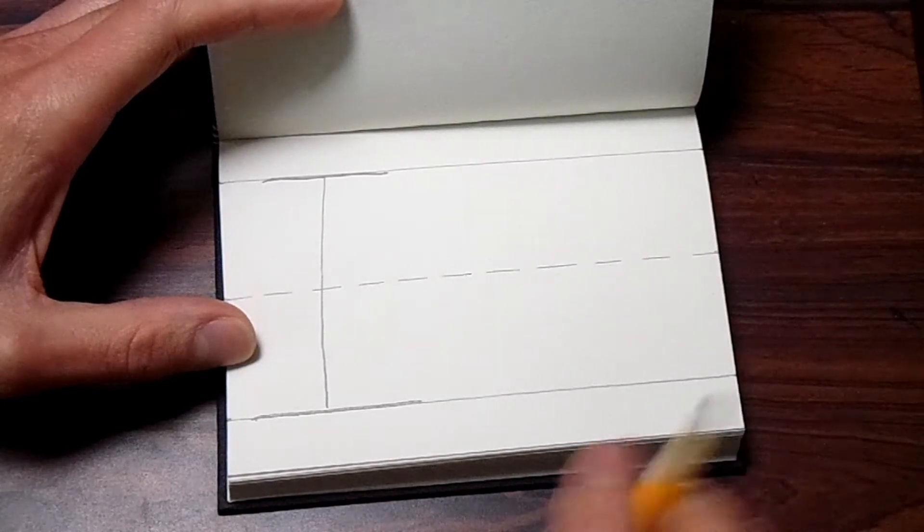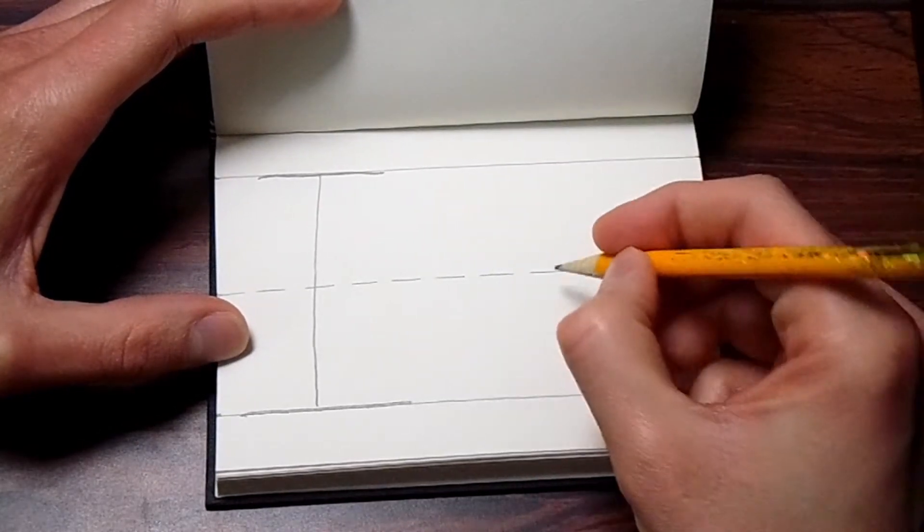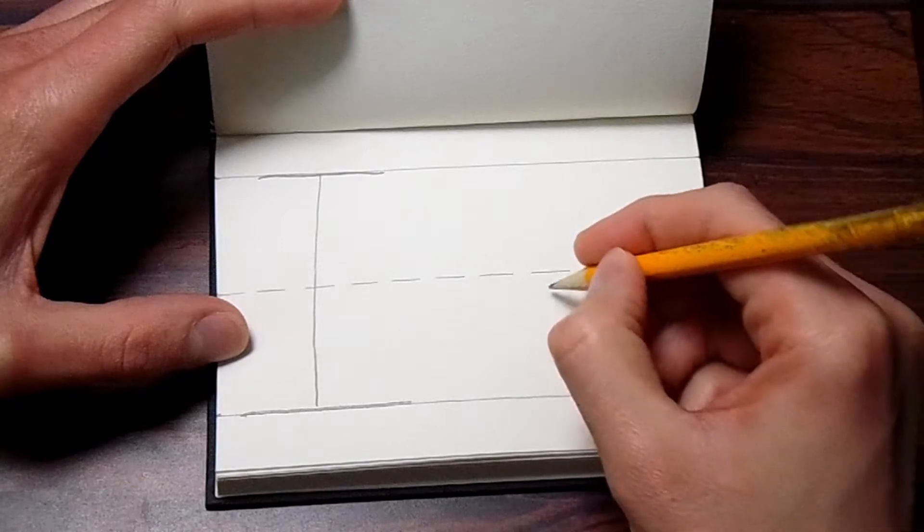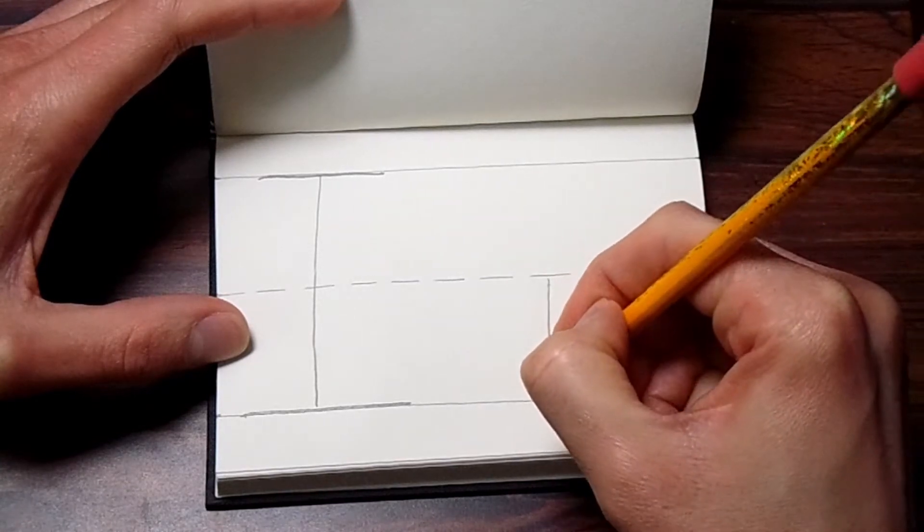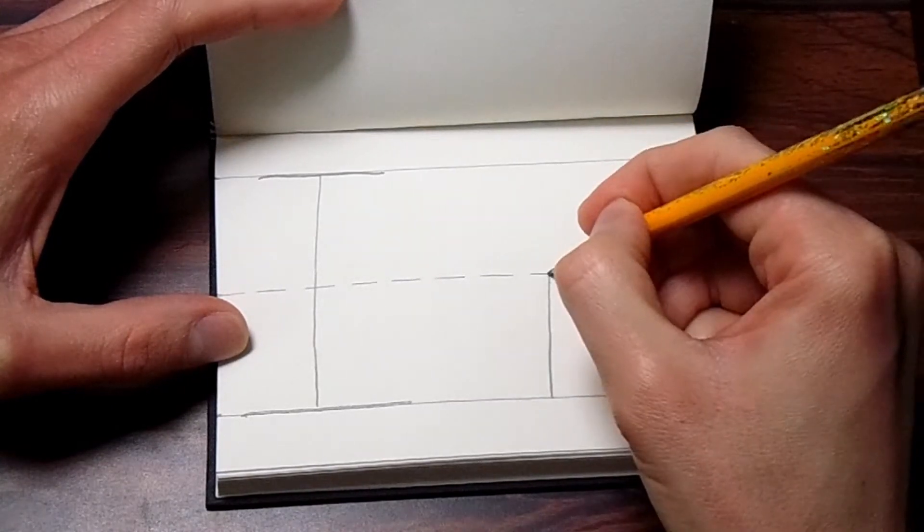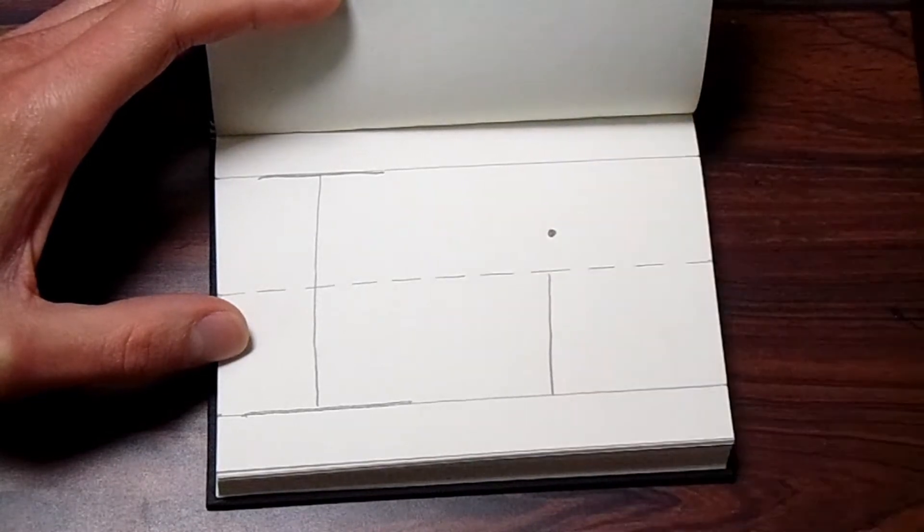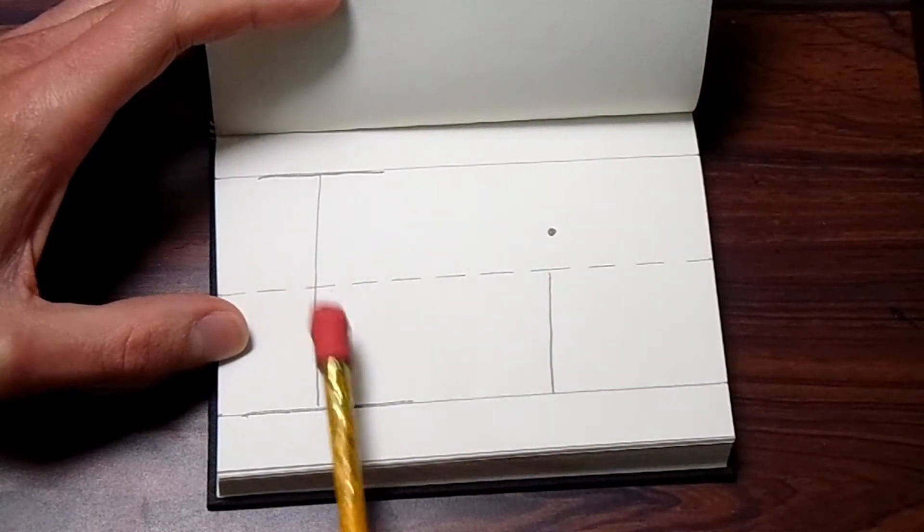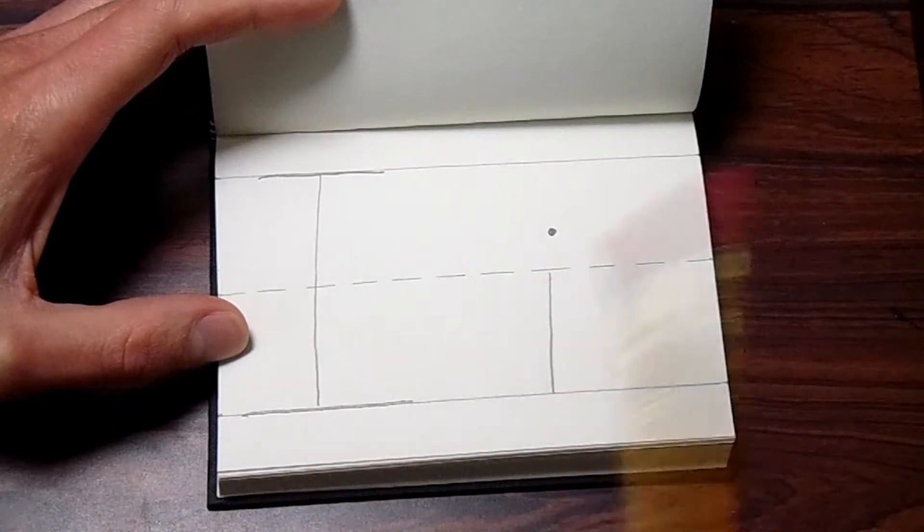To do the lowercase i, it's even easier. We're just going to go from the halfway mark, down to the bottom, with a straight line there. And then we're going to go above the line a little bit, and put a dot. And there you have it, the capital or uppercase I, and the lowercase i.